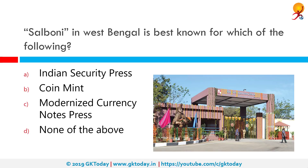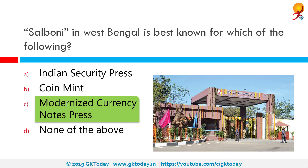Shalvani in West Bengal is best known for which of the following? The correct answer is a modernized currency notes press. Shalvani is a village in Medinipur district of the Indian state of West Bengal and is the location of one of the Reserve Bank of India's currency printing presses.